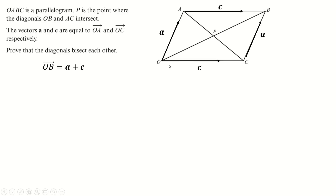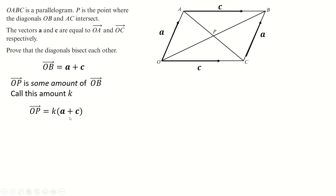Now the first thing we need to learn is that if you're looking at something like O to P, O to P is following the same line as O to B, which we just found, but it stops short. It's just some amount of that line. We can represent that algebraically by calling it some amount K of that thing. So O to P is K times O to B — some fraction of it. K could be 0.4 or 0.5. I'm hoping it's 0.5, because if K is 0.5, that means this length is half of the whole thing, which is what I wanted to show.